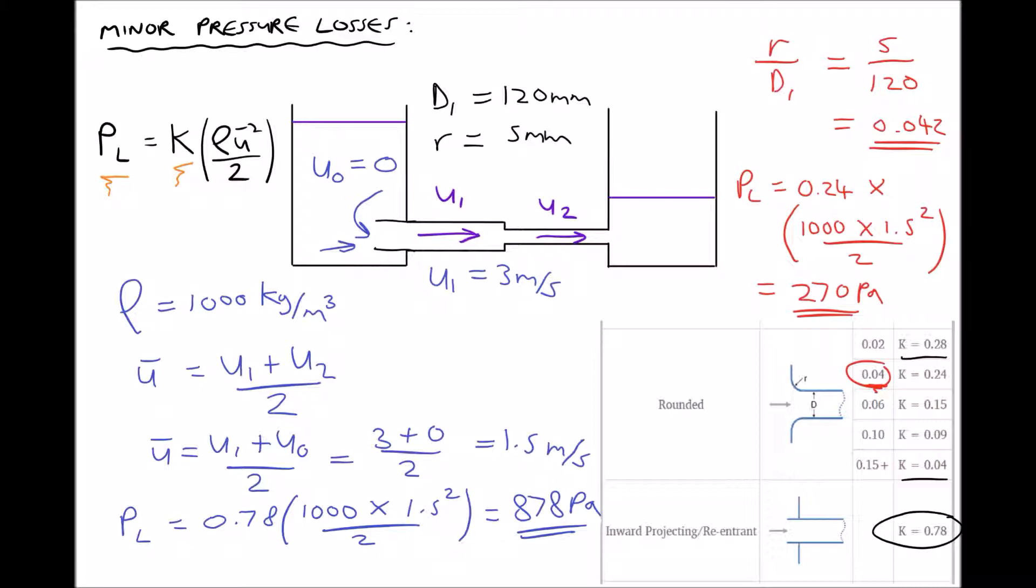So just to recap, we have one formula for calculating minor pressure losses: PL equals K ρ ū bar squared over 2. ū bar is the average of the velocities before and after the feature, and ρ is the density of the fluid. Values of the resistance coefficient K can either be found through literature, as in the case of the table on the bottom right hand corner, or they can be calculated for features such as square reductions and square expansions.